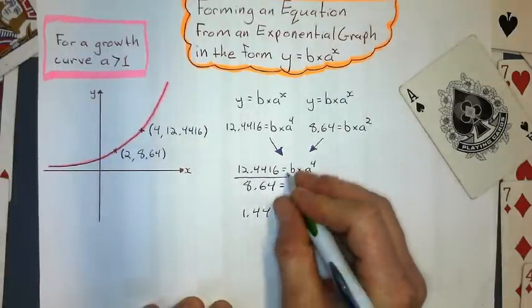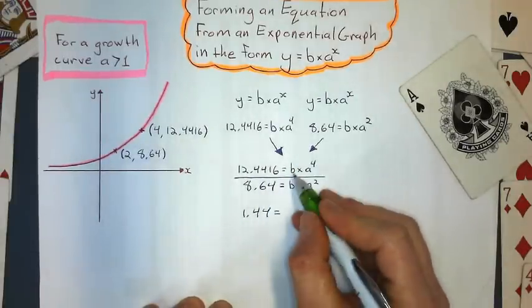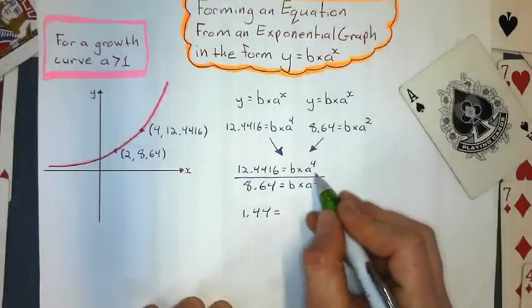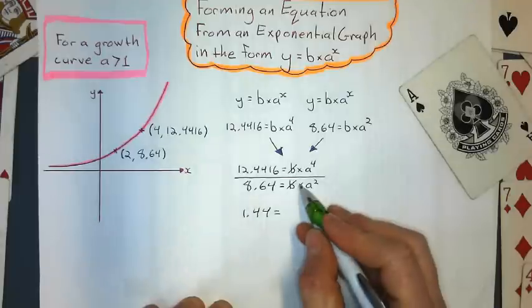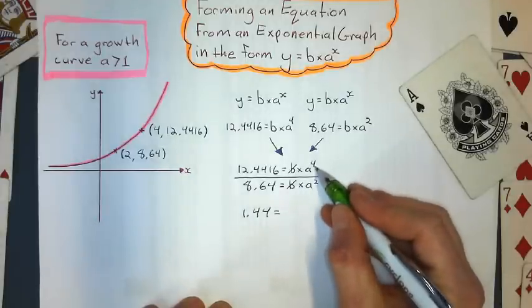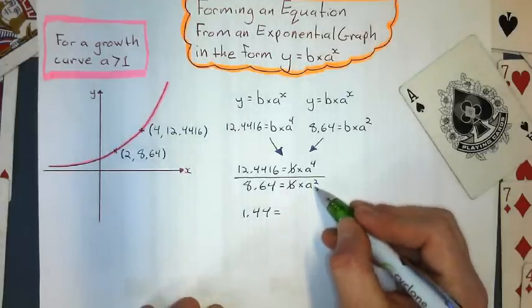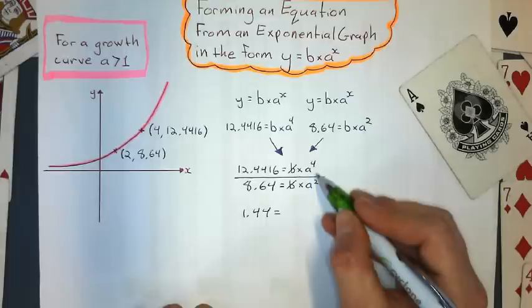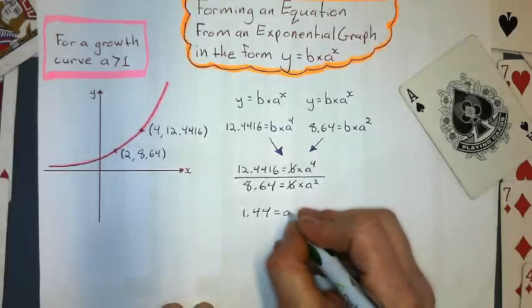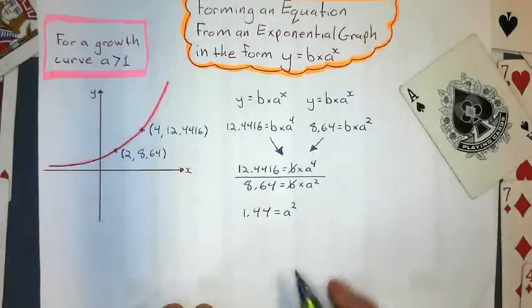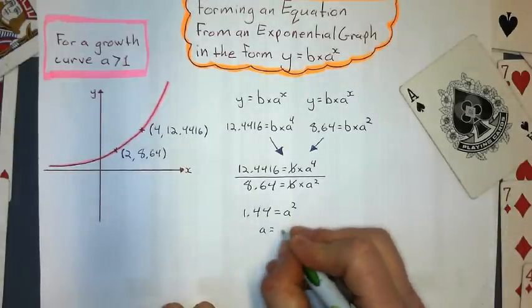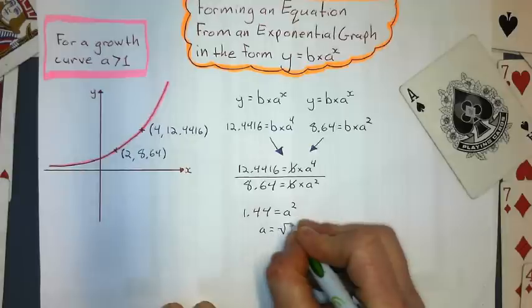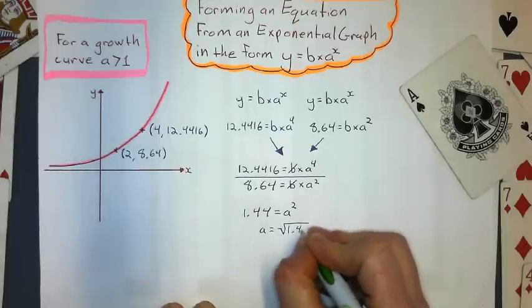The equal signs don't cancel out. I still want an equation. But the b variable does. Remember, these are connected by multiplying. So I can cross cancel these two b's. And what's left is a to the fourth divided by a squared. And when we divide powers, we subtract the exponents. So I get a squared. Now at this point, we should know how to solve for a.